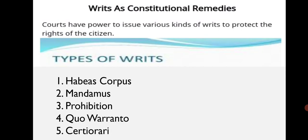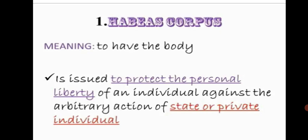Courts have powers to issue various kinds of writs to protect the rights of citizens. There are five types of writs: habeas corpus, mandamus, prohibition, quo warranto, and certiorari. The first is habeas corpus — a Latin phrase meaning 'to have the body.' It is issued to protect the personal liberty of an individual against the arbitrary action of the state or a private individual, providing protection from unlawful arrest and detention.